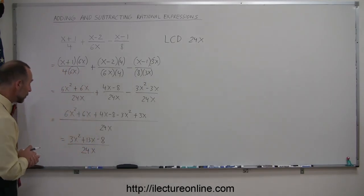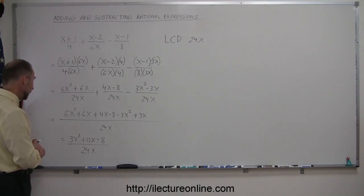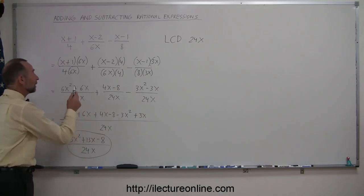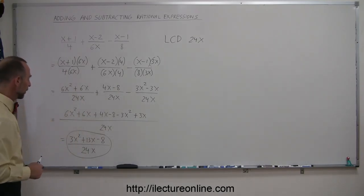Now, typically what you would like to do here is make sure you cannot factor anything out of the numerator or the denominator. It looks like, no, 13 is a prime number, and you cannot factor out an x, so that would then be the final answer, the most simplified form of the addition and subtraction of those rational expressions.